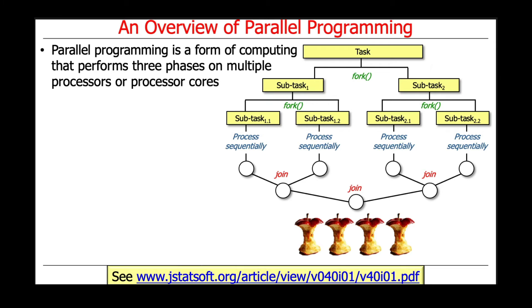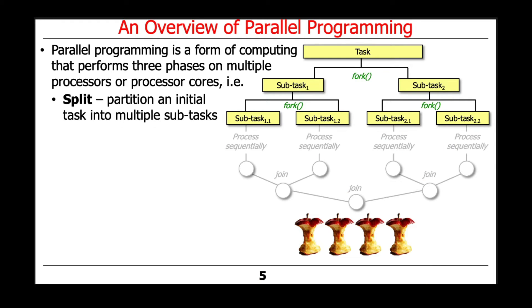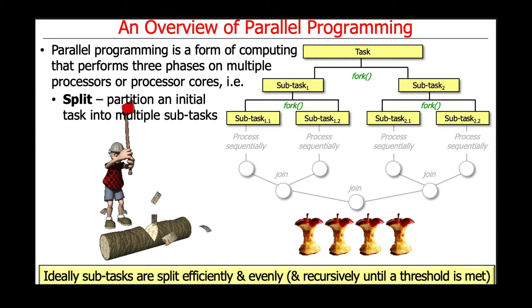Parallel programming, as we're going to use it, is a form of computing that performs three phases on either multiple processors or, more likely these days, multiple processor cores. The first phase is the splitting phase, which is about taking some initial task or dataset and partitioning it into multiple subtasks. This partitioning process may occur multiple times until we can split the original task or dataset up into small enough units that can be processed concurrently and atomically in parallel. The typical way of doing this is to split the subtasks evenly and efficiently until some type of threshold is met.